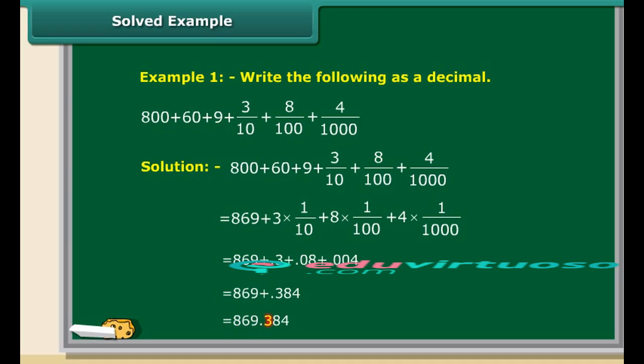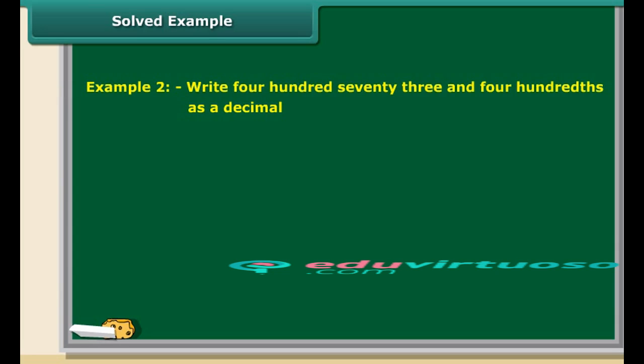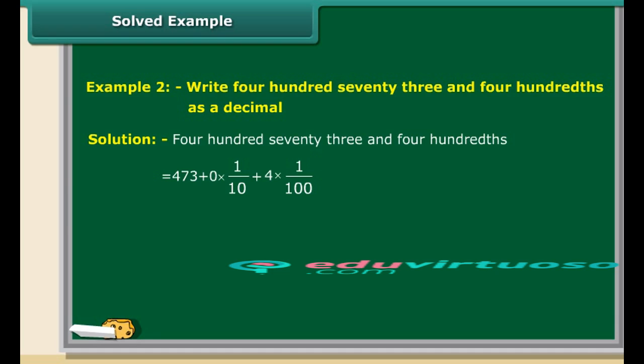Let us solve one more question. Write 473 and 4 hundredths as a decimal. In this number, 473 is the whole part. The decimal part is 4 hundredths, which can be written as 0.04. So the number is 473.04.